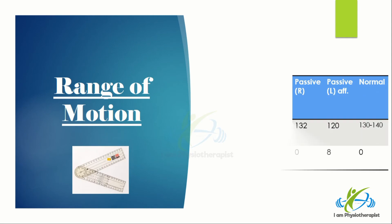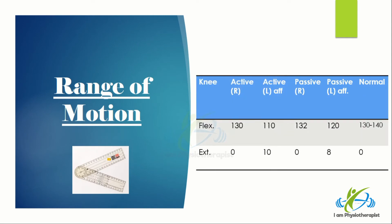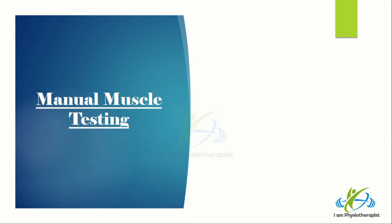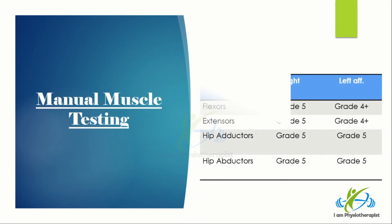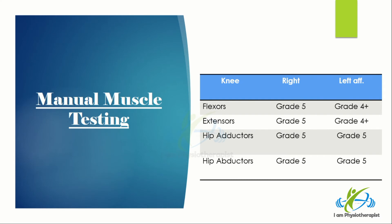Range of motion of the right side was in normal range. Active knee flexion of the left side was approximately 110 degrees, and passive knee flexion of the left side was approximately 120 degrees. Knee extension of the left side was slightly limited. Manual muscle testing of the right knee flexors, extensors, hip adductors and abductors showed grade 5. The left knee flexors and extensors were grade 4+. The gait pattern of the patient was normal.